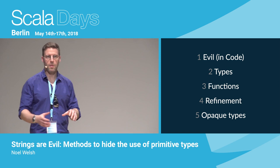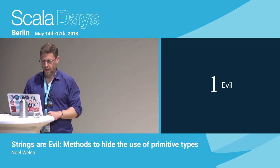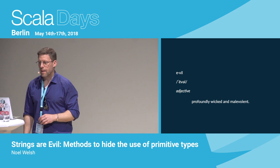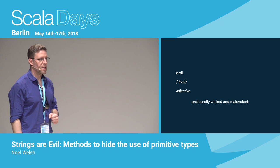So first, let's look at evil. What is evil? Evil is something profoundly wicked or malevolent, according to the dictionary. In our code, what this is, is ways that bugs enter our code - ways that we don't guard against the wickedness of bugs getting into our code. So let's have an example.